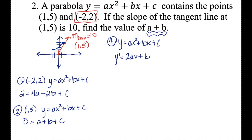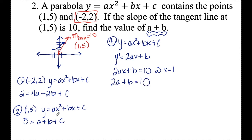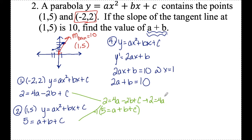Now I can call upon this system. Stacking the two point equations: 2 equals 4a minus 2b plus c, and 5 equals a plus b plus c. If I multiply the second equation by negative 1, I get negative 5 equals negative a minus b minus c. This is helpful because now the c's cancel out, and I'm left with negative 3 equals 3a minus 3b.